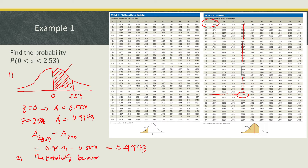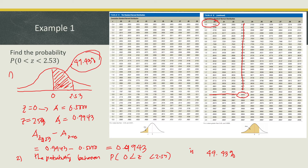Therefore, the probability between Z equal to zero and Z equal to two point fifty three is 49.43 percent.